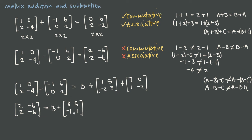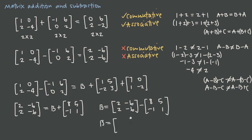To get B by itself, I subtract the matrix 8, 5, negative 1, 1 from both sides. So B equals the matrix 2, negative 6, 2, negative 6 minus the matrix 8, 5, negative 1, 1. Performing that subtraction: 2 minus 8 is negative 6, negative 6 minus 5 is negative 11, 2 minus negative 1 is positive 3, and negative 6 minus 1 is negative 7. So the matrix B that makes this matrix equation true is negative 6, negative 11, 3, negative 7.